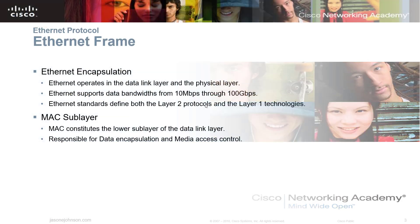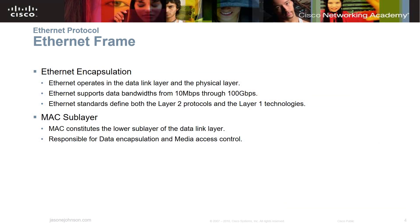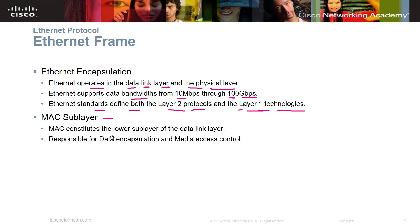In section 5.1, we talk about Ethernet encapsulation. Ethernet operates in the data link layer and the physical layer — layers one and two of the OSI model. Ethernet supports data bandwidth from 10 megabits through 100 gigabits. Ethernet standards define both the layer two and layer one protocols of the OSI model. The MAC sublayer constitutes the lower sublayer of the data link layer and is responsible for data encapsulation and media access control.